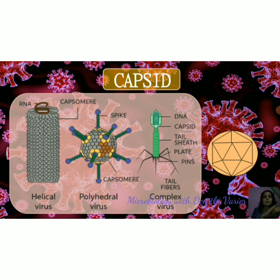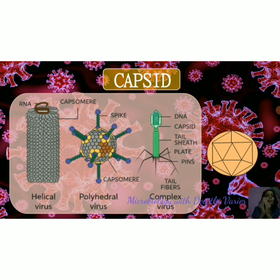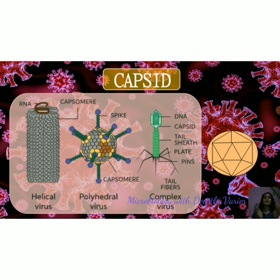The next layer present outside the genome is the capsid. The capsid is made up completely of proteins, and the subunits of the capsid are called capsomeres. Several capsomeres combine together to form the final capsid. These capsomeres are in turn made up of monomers which could be either hexamers or pentamers, and these monomers together form the capsomere — each of which acts as the functional unit of the capsid.